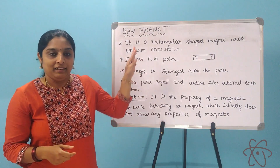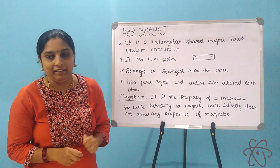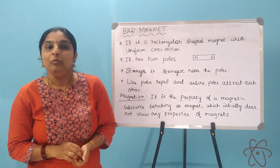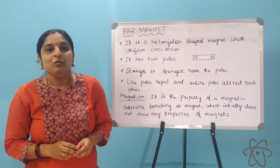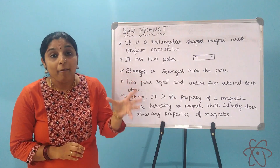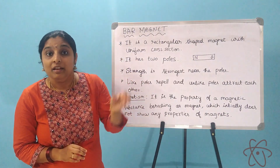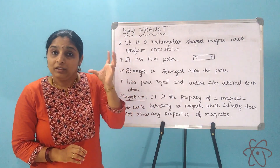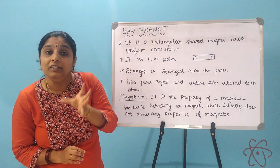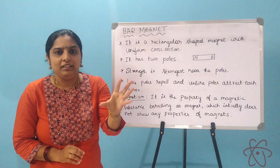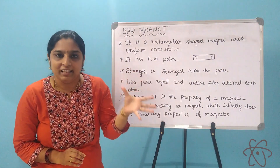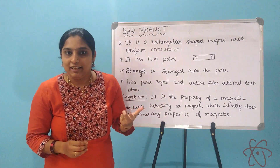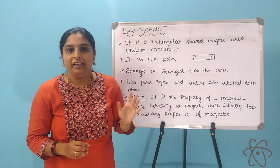Now let us go to the next concept, which is magnetism. Magnetism is the property of a magnetic substance which acts like a magnet even though basically it is not a magnet. When this magnetic substance comes in contact with a magnet for some time, it behaves like a magnet, even though it does not originally have any properties of a magnet. We will understand this through an experiment.